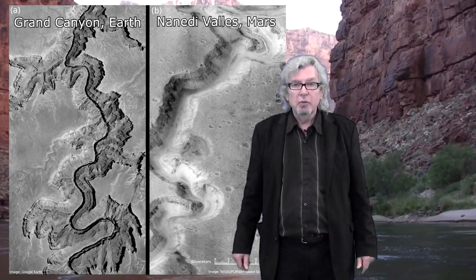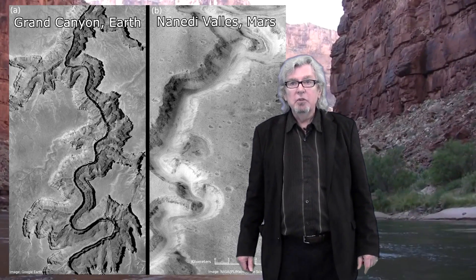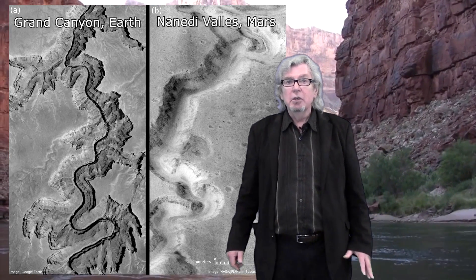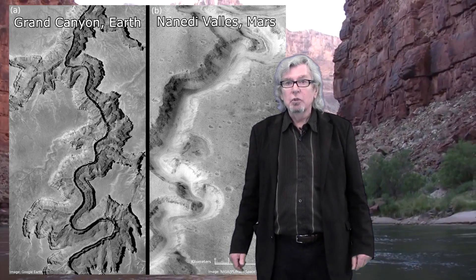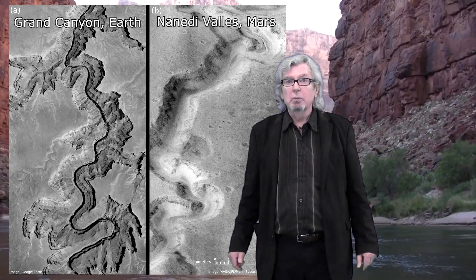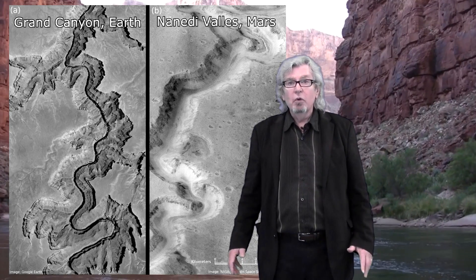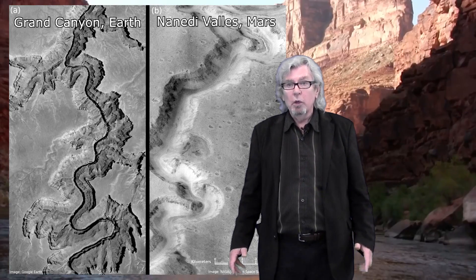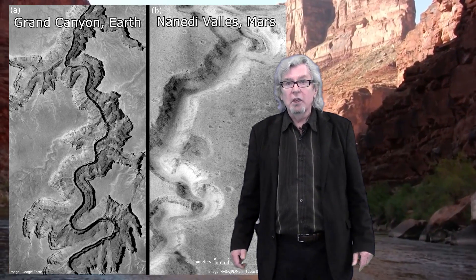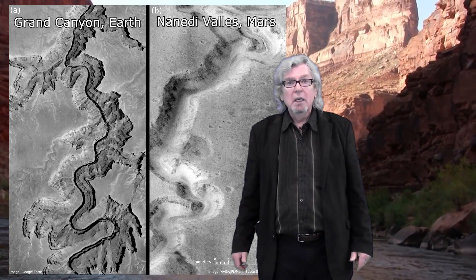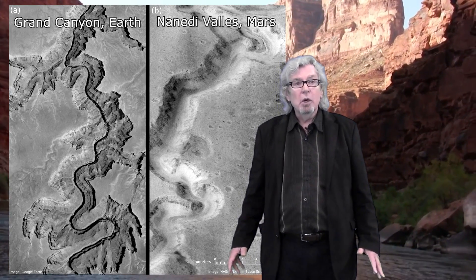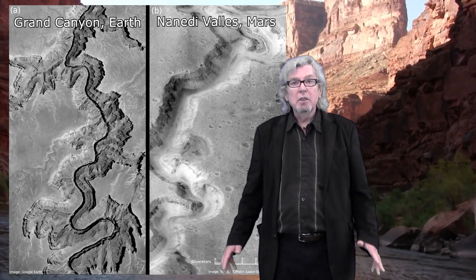These channels form very specific patterns of erosion on the Earth's surface. When we see similar linear patterns of erosion on the surface of other planets, we can infer that they formed by flowing water over that surface, even if there's no water present on the planet today.